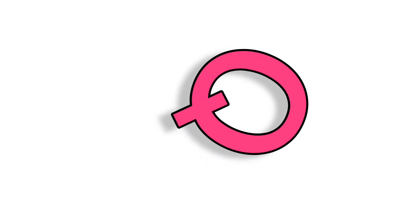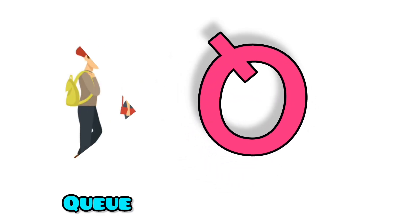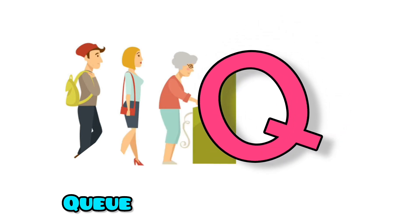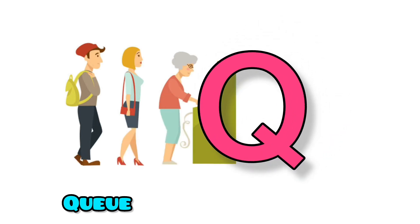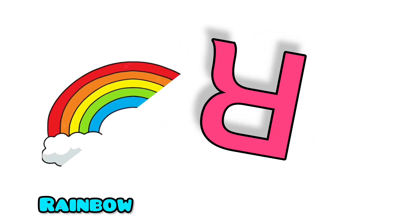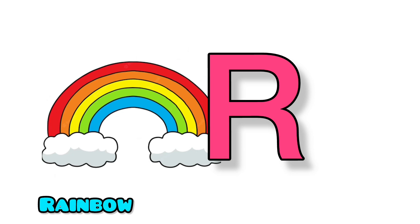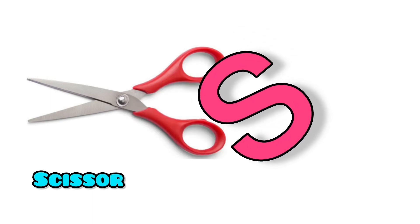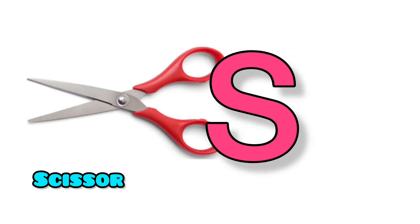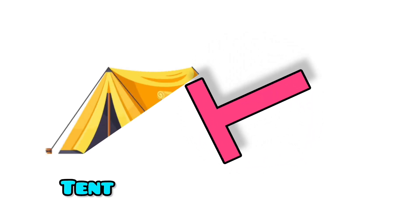Q. Q for cue. R. R for rainbow. S. S for scissor. T. T for tent.